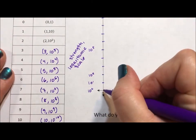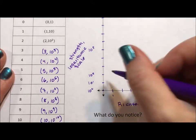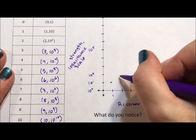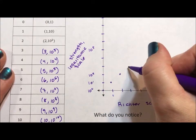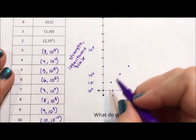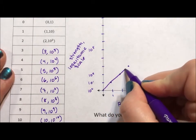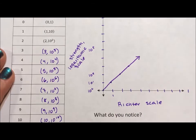Which means 0, 1 gets graphed here, 1, 10 gets graphed here, 2, 100, 3, 1000. And we start to see we have this, what looks like the graph of y equals x.